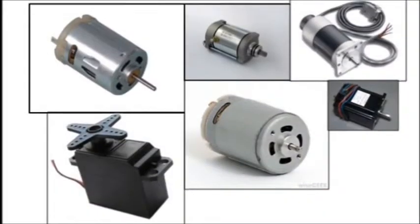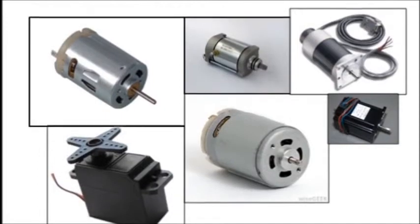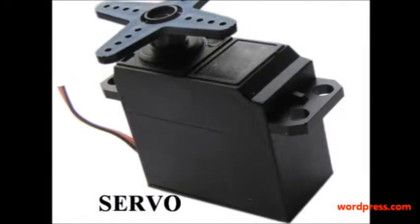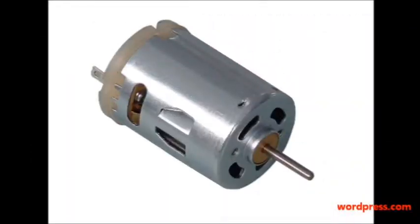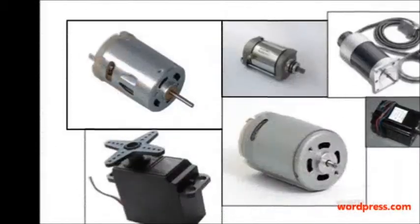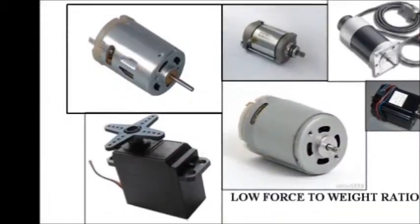Different kinds of actuators were used just to achieve the proper movement of the human elbow. Some of them use motors such as servo, stepper, and DC, which sacrifices the force because all these actuators have low force-to-weight ratio.